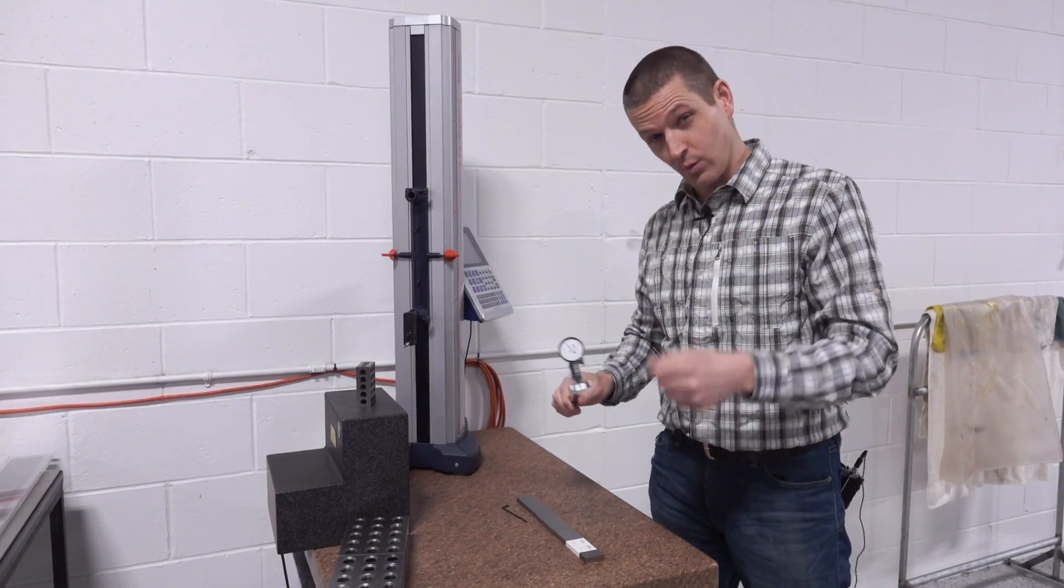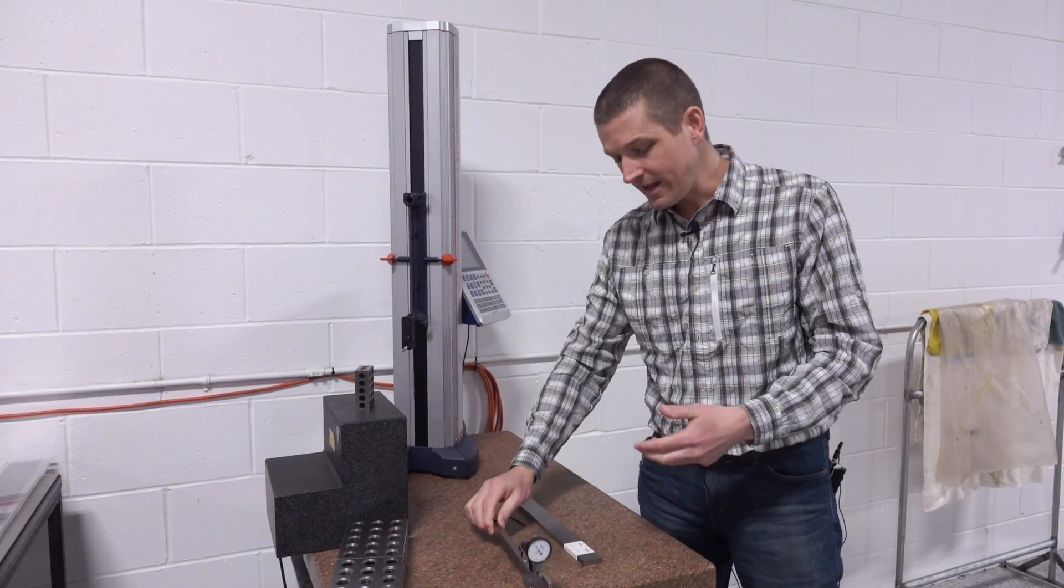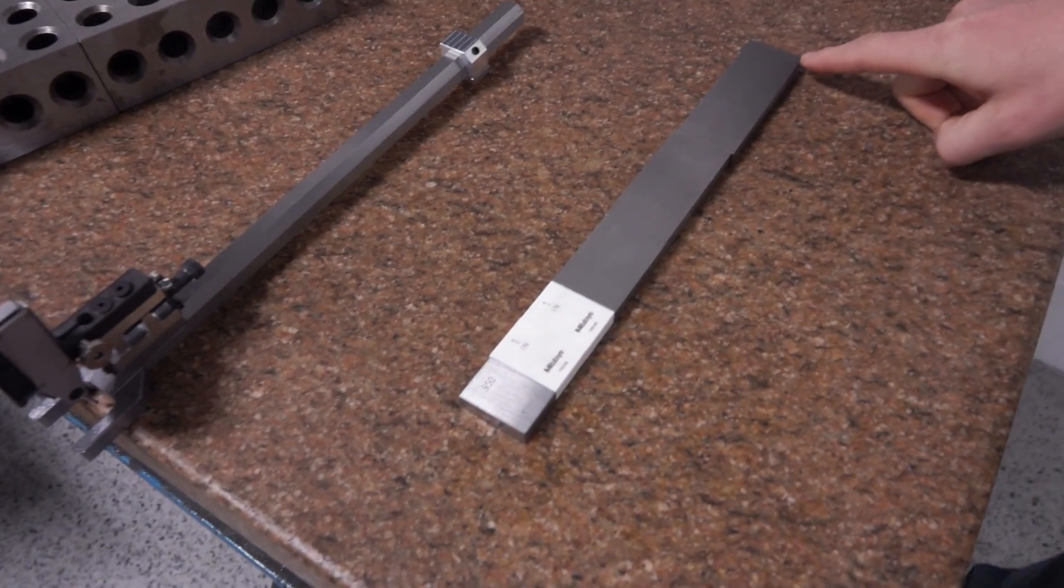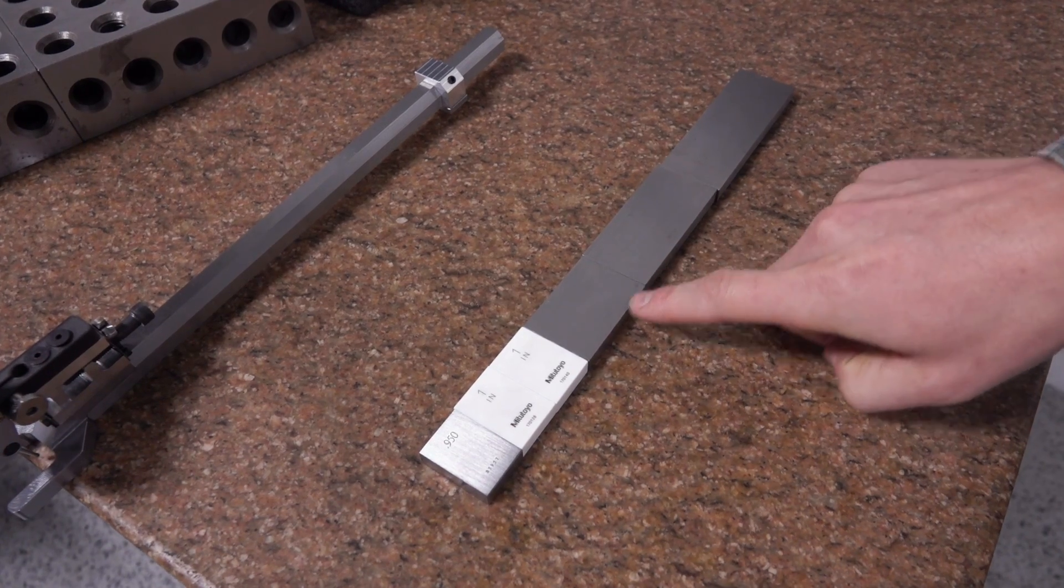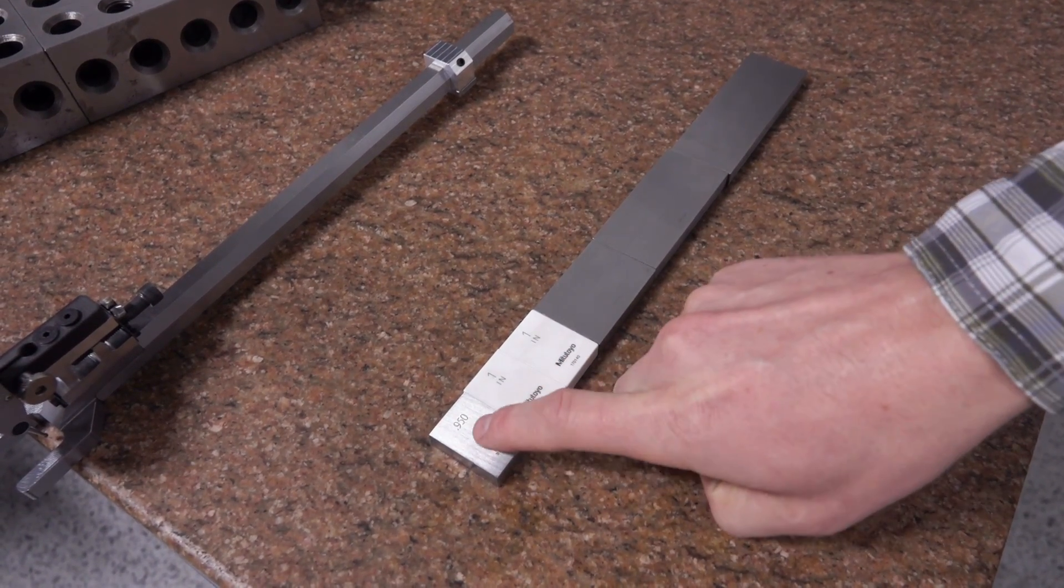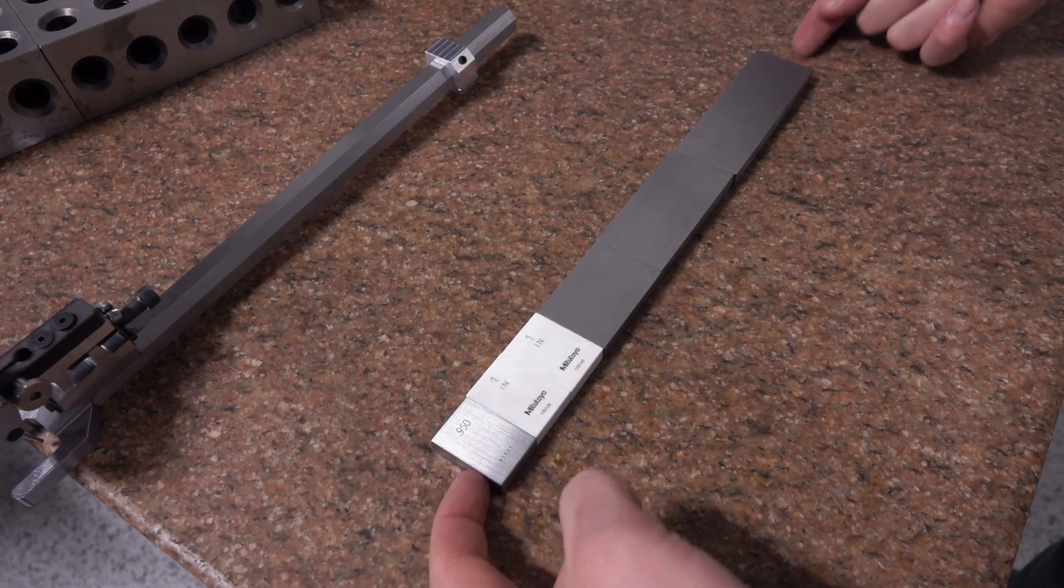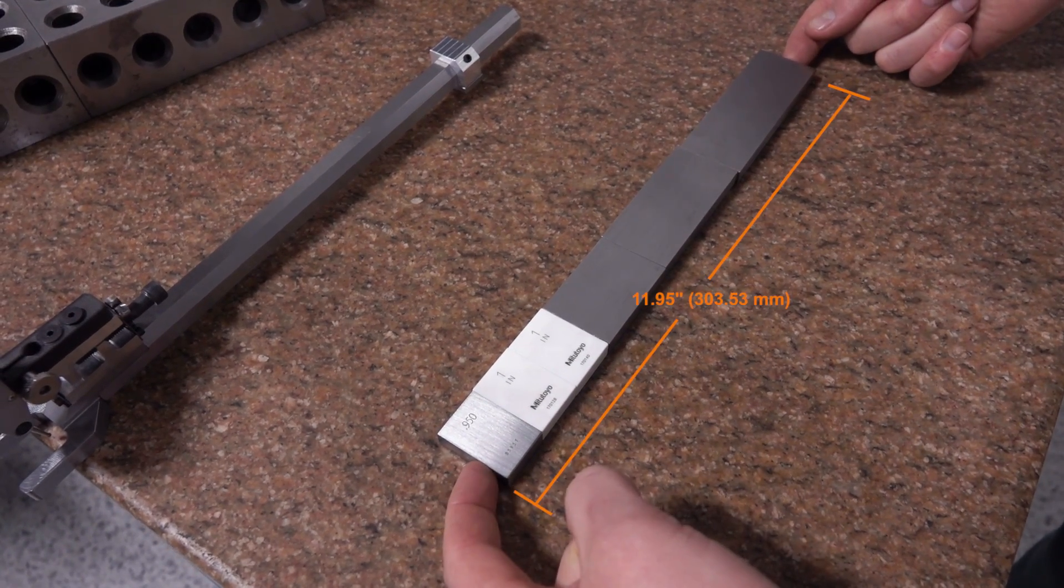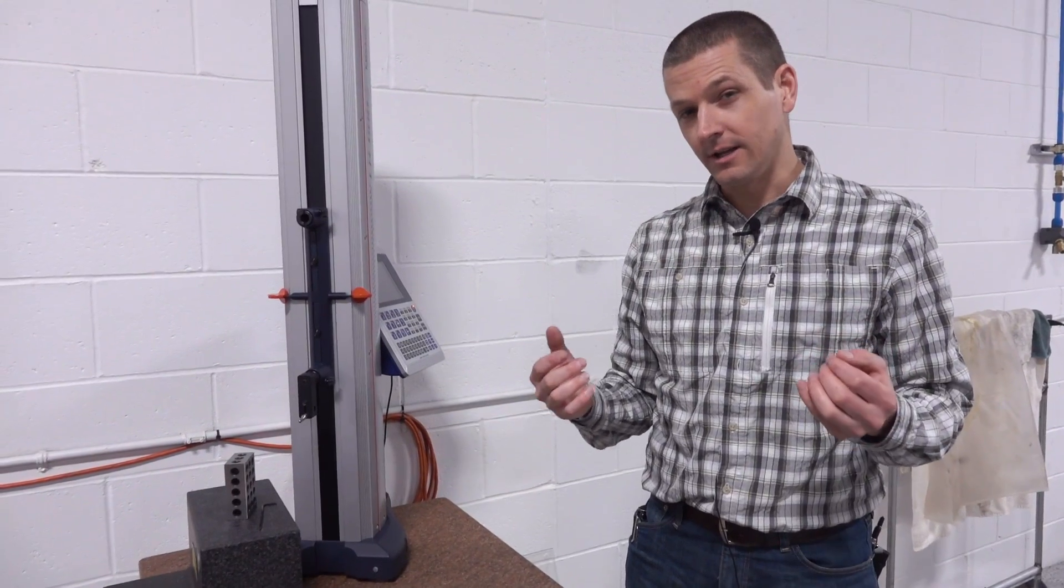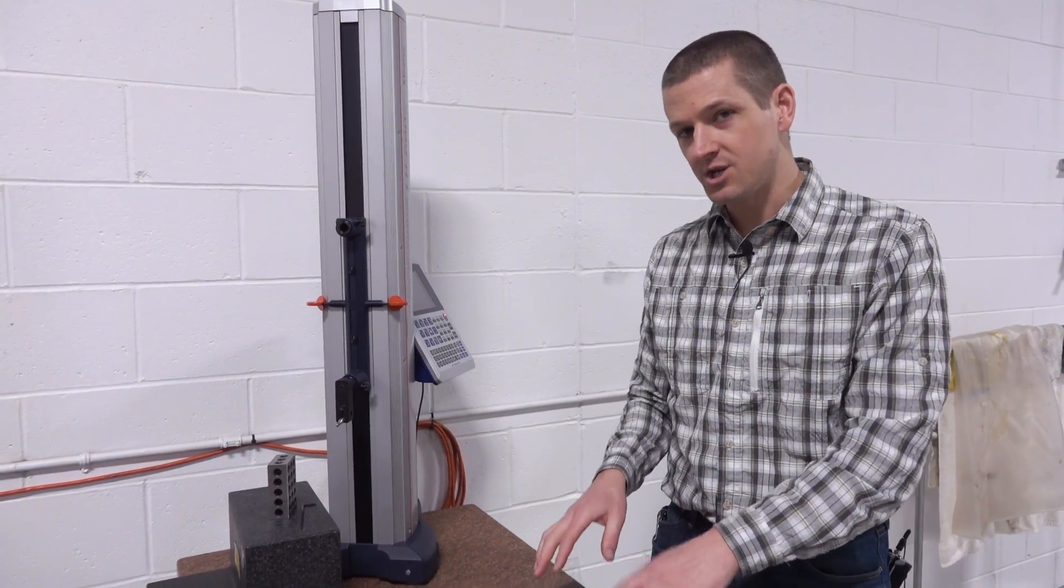So, two different ways that we can use this in the shop. First way is probably the most common way which is gauge blocks. So, we've got a 4 inch plus a 3 inch that's 7 plus 2 is 9 plus 1 is 10, 11 and then a 0.950. So, this should be a relatively accurate 11.95 inches. I say relatively accurately, there's a few different things going on with gauge blocks.